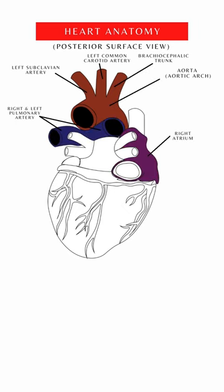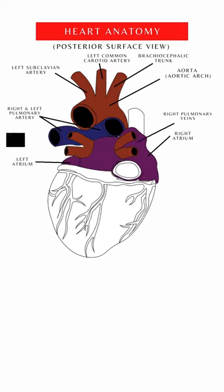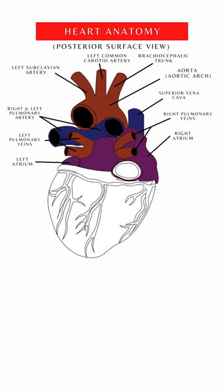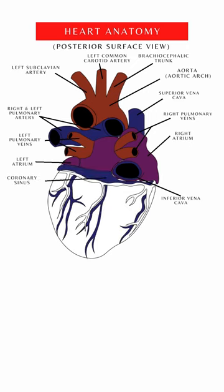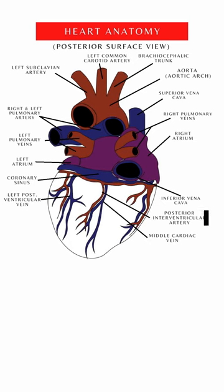The right atrium, the left atrium, the left and right pulmonary veins, the superior vena cava, the inferior vena cava, the coronary sinus, left posterior ventricular vein, the middle cardiac vein, and the posterior interventricular artery.